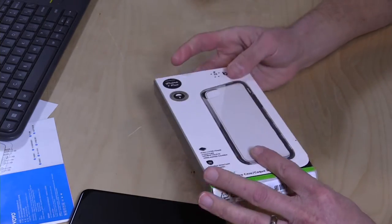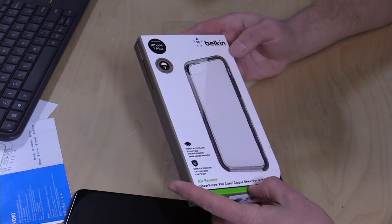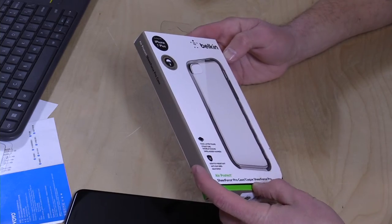Hey everybody, it's Lon Seidman and we've got another iPhone 7 Plus case to take a look at. This is from Belkin. This one's called the Sheer Force Pro case.